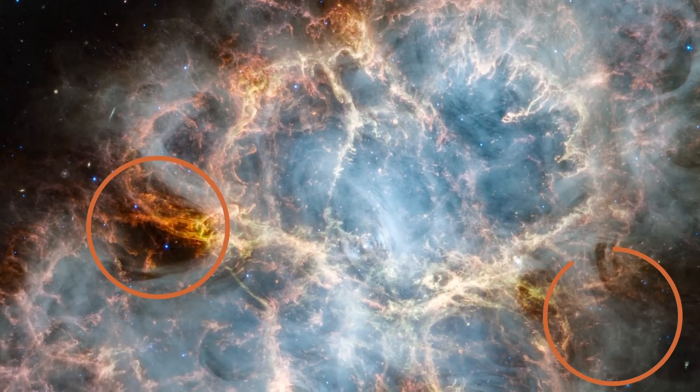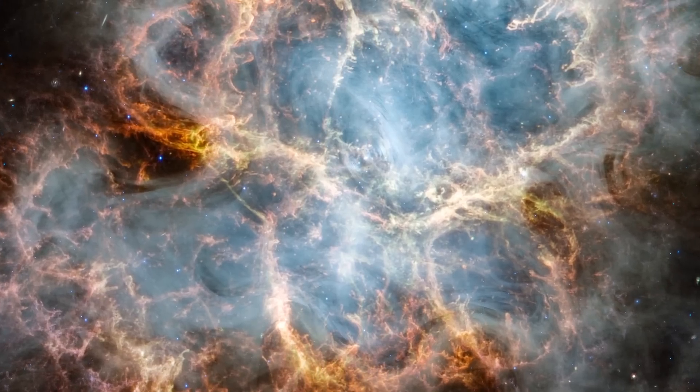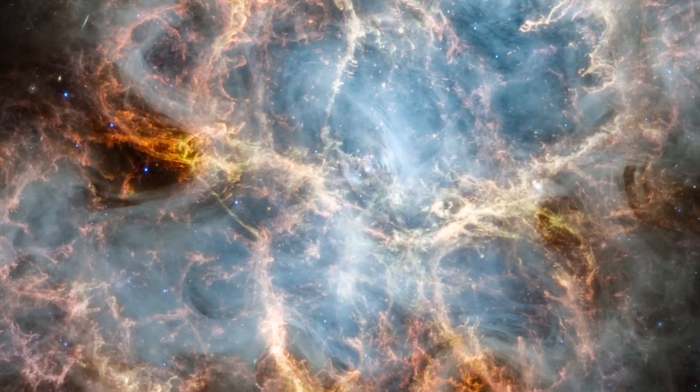Here and here, the nebula appears to narrow. This abrupt slimming may be caused by the confinement of the pulsar wind's expansion by a belt of dense gas.